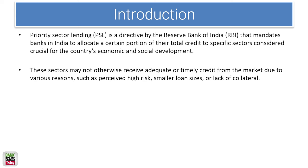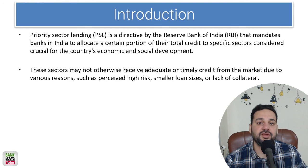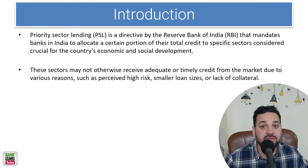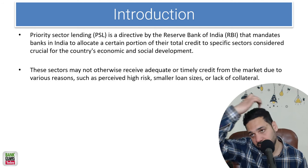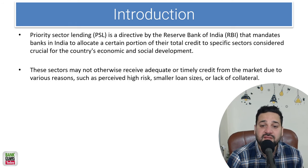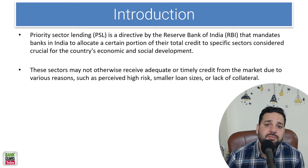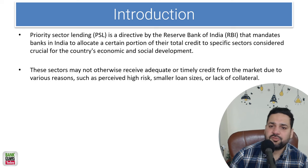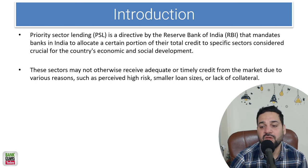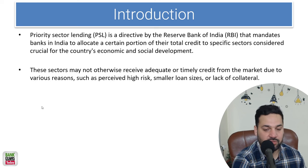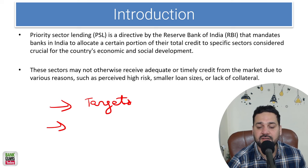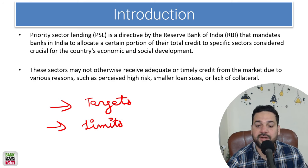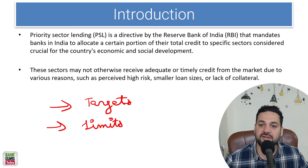What is priority sector lending? Banks were not interested in giving loans to agriculture or education — they preferred giving loans to corporates, where they could give 1000 crore at once and earn interest. But RBI said no: you need to give loans to the priority sector, to specific sectors which otherwise would not get loans.